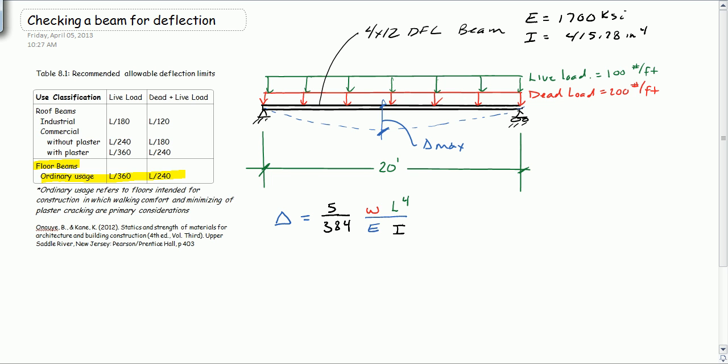So first of all, I recommend that we get everything in kips and inches, so L is equal to 240 inches. Let's look at our two loads. We have two different conditions we need to look at: we need to look at live load only, and we have to look at dead plus live load.